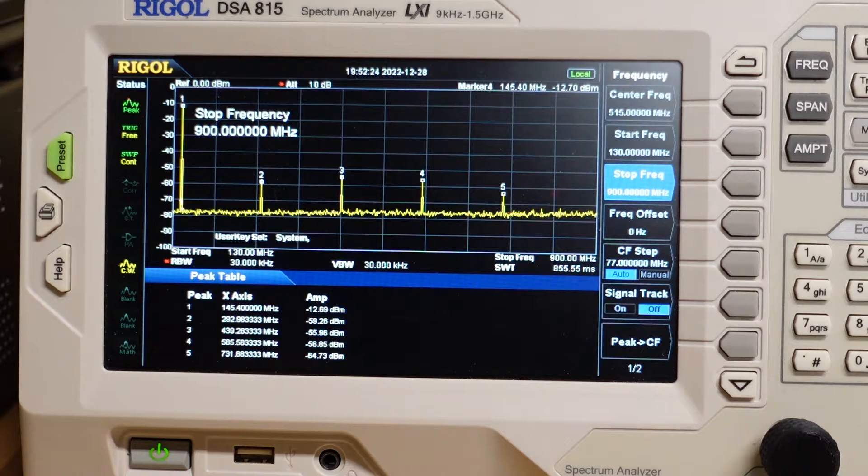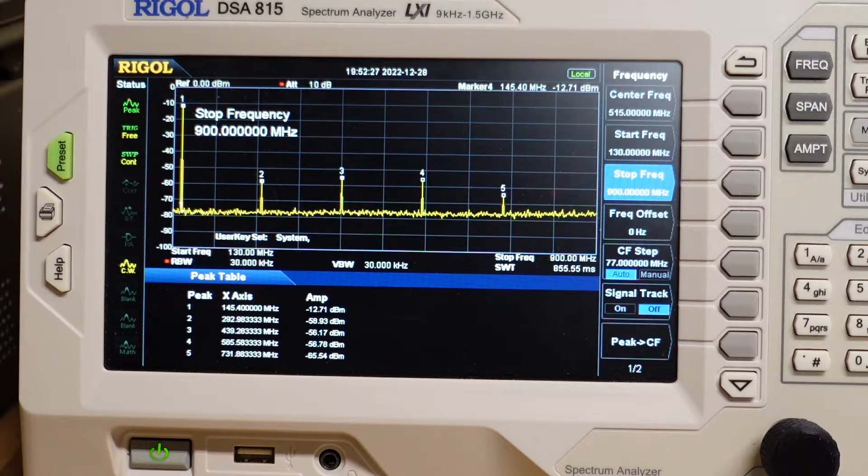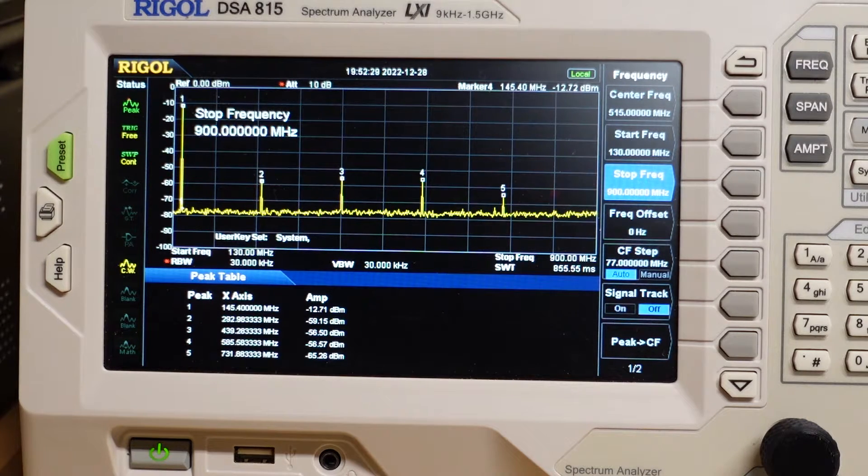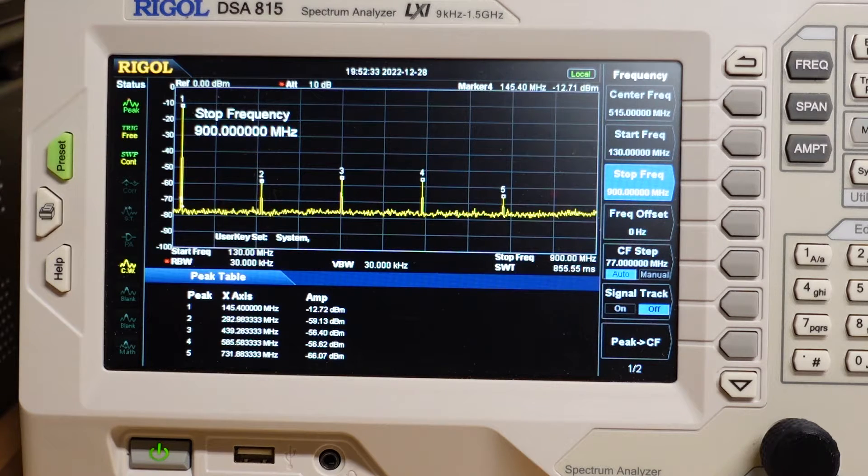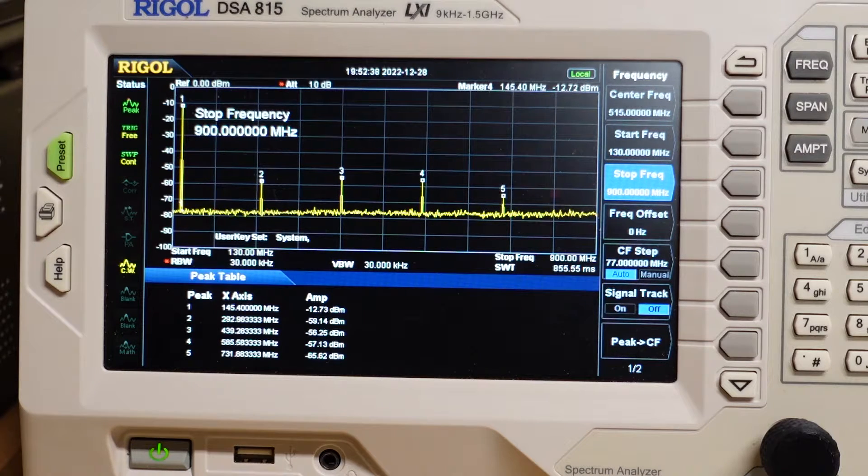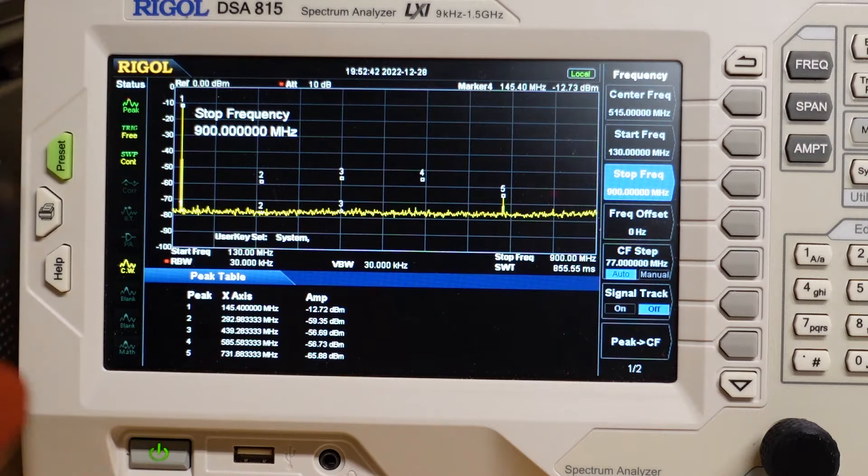So if we do some quick math, negative 59 minus negative 12 is going to be 43 dBm down. So technically this radio on VHF call meets FCC standards, even though it is not FCC certified.